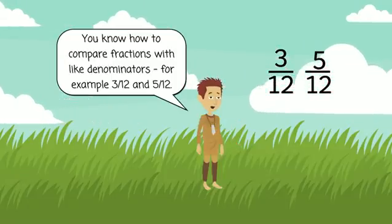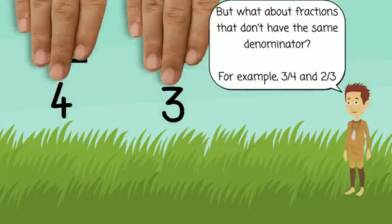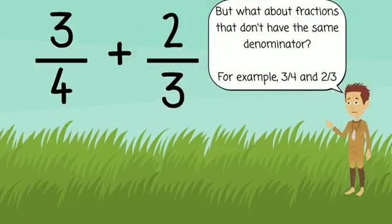For example, 3-12ths and 5-12ths. But what about if you need to compare fractions that don't have the same denominator? For example, 3-4ths and 2-3rds.